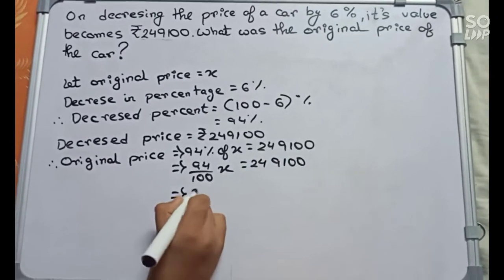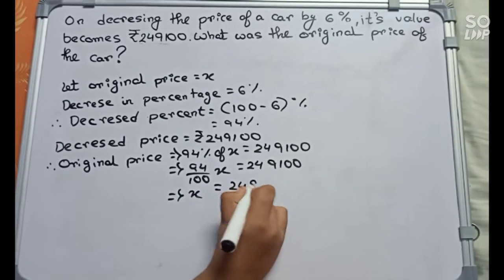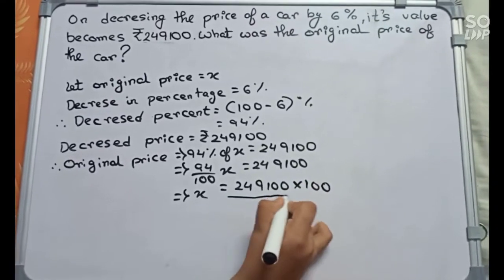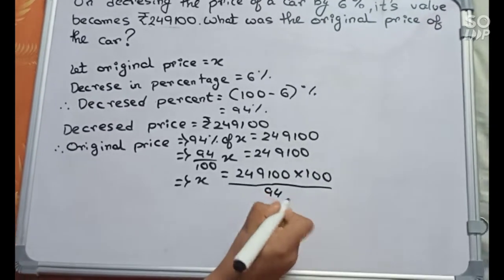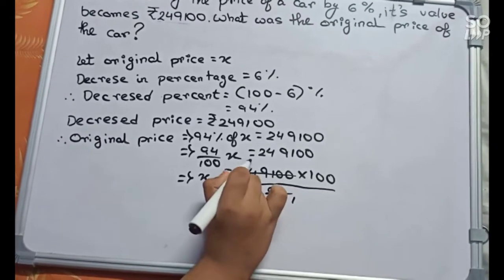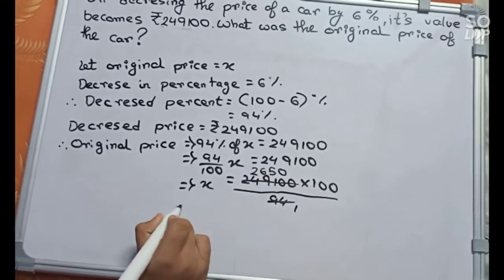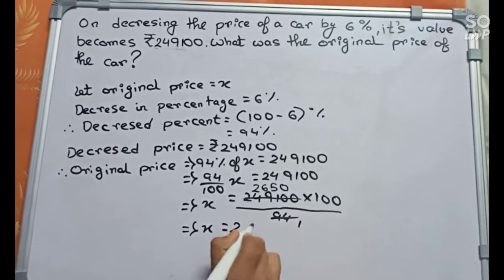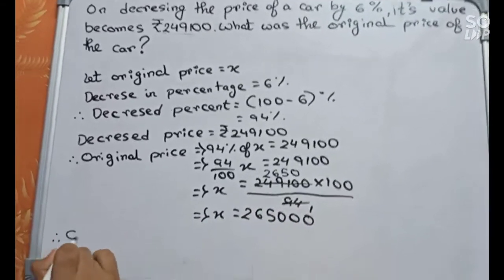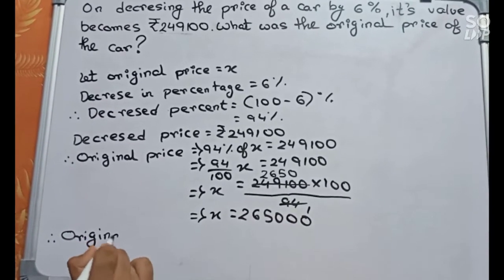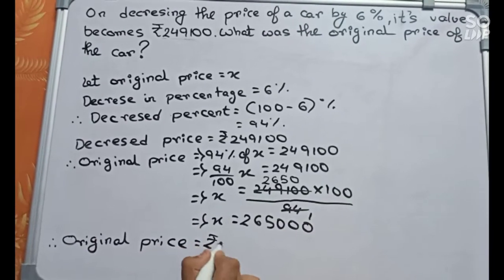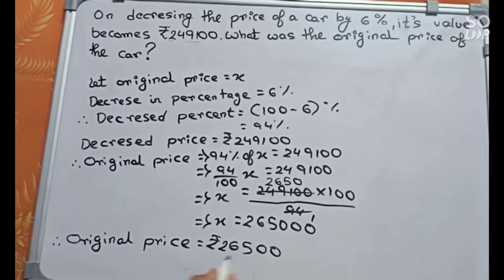So x equals to 2,49,100 multiplied by 100, divided by 94. You can divide 2,49,100 by 94 directly — it becomes 2,650. So x equals to 2,65,000. Therefore, the original price equals to rupees 2,65,000.